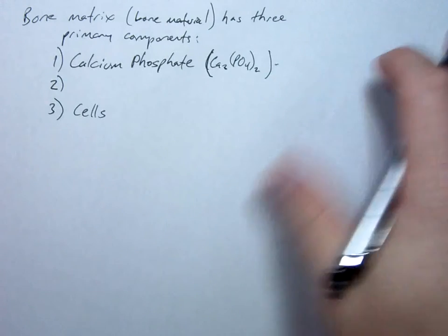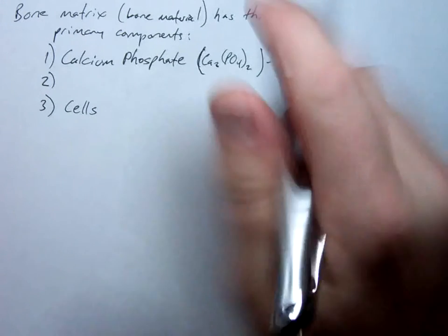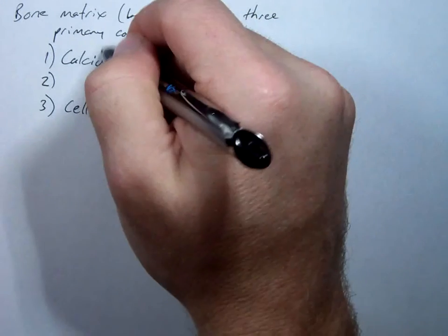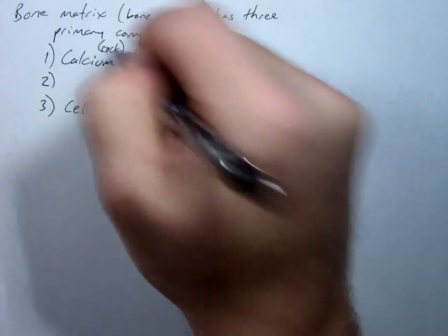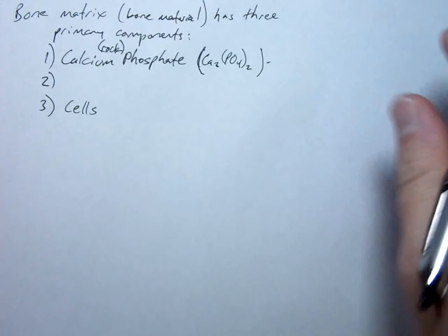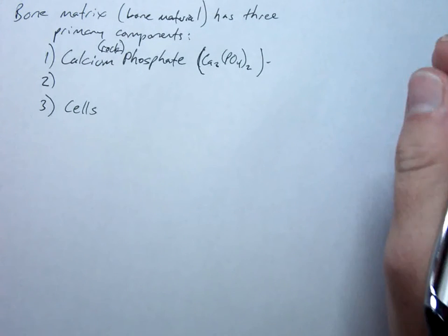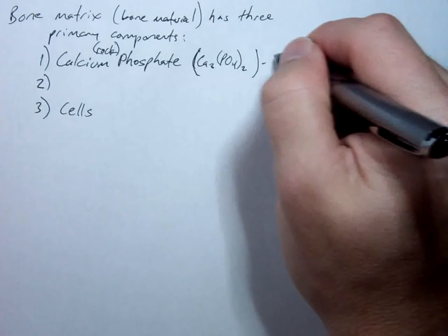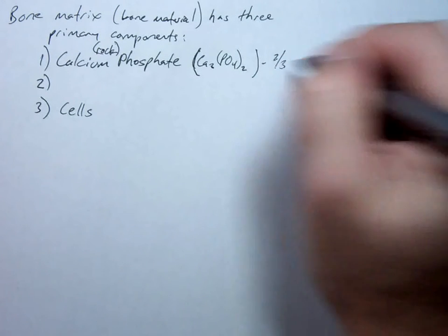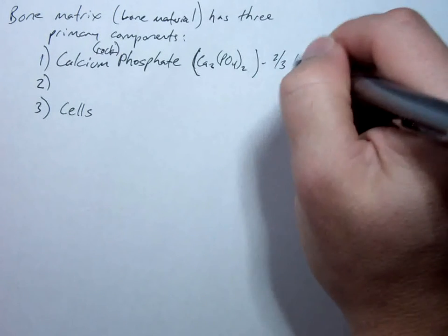Tricalcium phosphate is basically like rock — or concrete. It's really, really rigid. This makes two-thirds of the bone's weight.